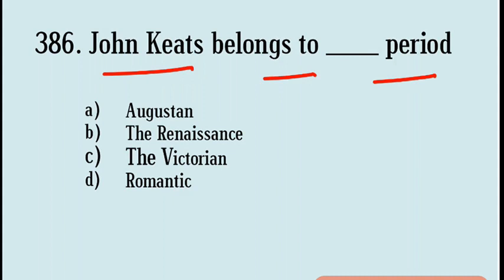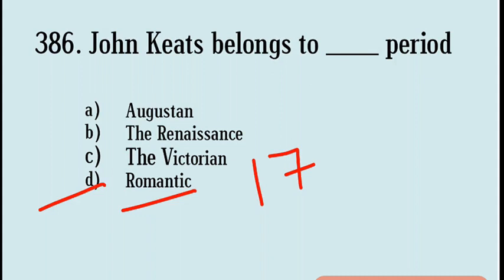Next question: John Keats belongs to which period? Options are Augustan, the Renaissance, the Victorian, the Romantic. Correct answer: Option D, Romantic period. The Romantic period started from 1798 to 1837.